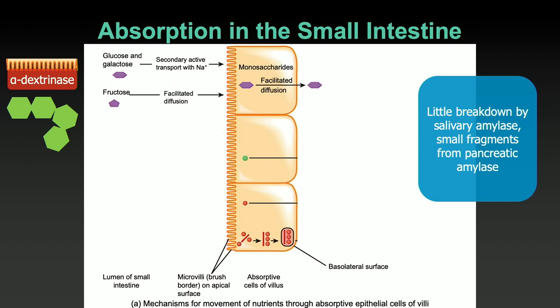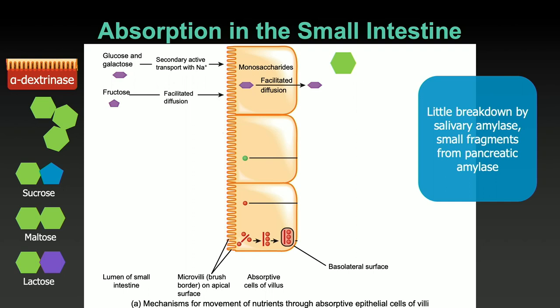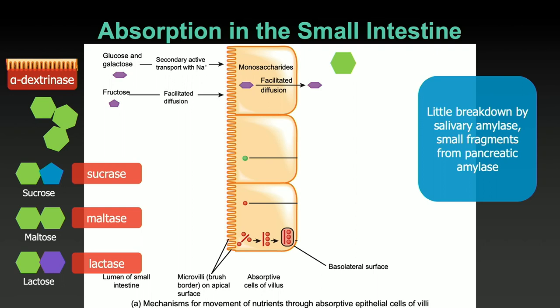These small pieces, if they're longer — four-plus saccharides in a row — alpha-dextrinase will break these down. But more commonly we'll see disaccharides in solution, like common table sugar, which is sucrose; maltose, which is two glucoses; and lactose, a different kind of disaccharide. Each of these has their very own brush border enzyme that will break the disaccharide, releasing the individual monosaccharide. And those are absorbed pretty easily.